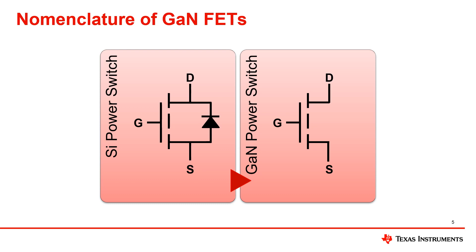However, GaN power switches do not have a body diode, as silicon MOSFETs do. GaNFETs also have similar parameters and parasitic components, which we will be discussing in the parameter and design recommendation videos for GaN.